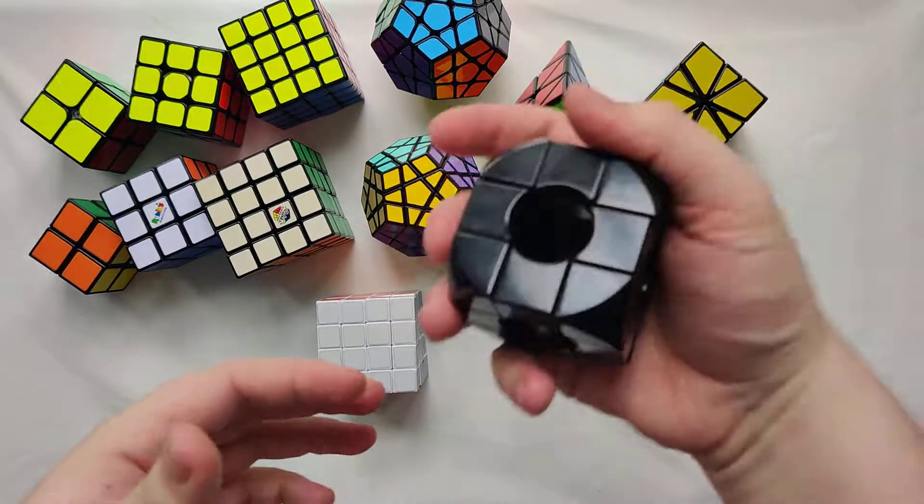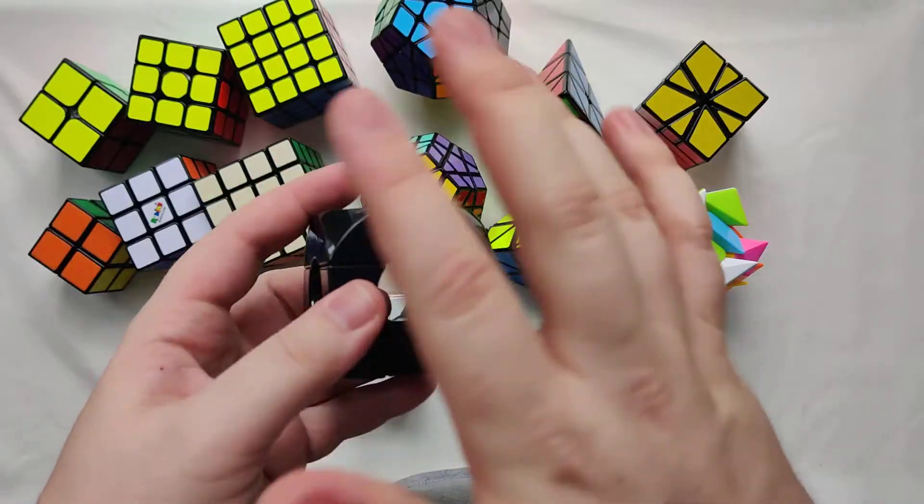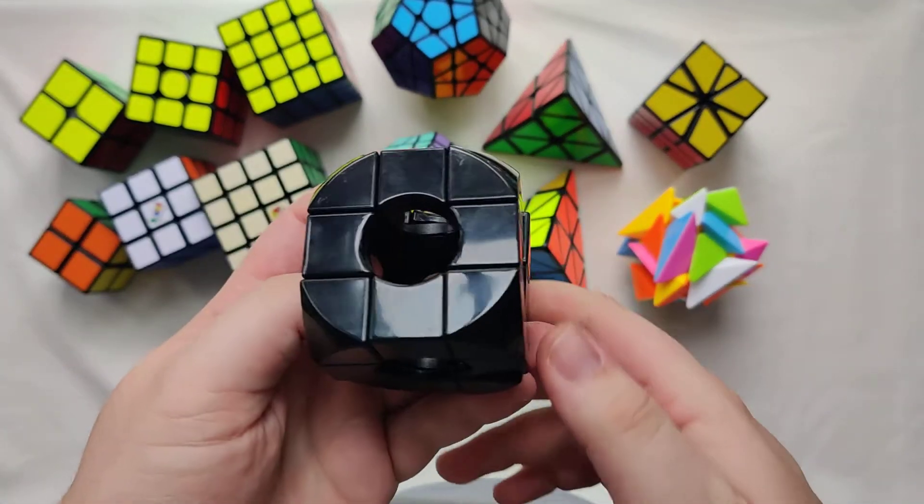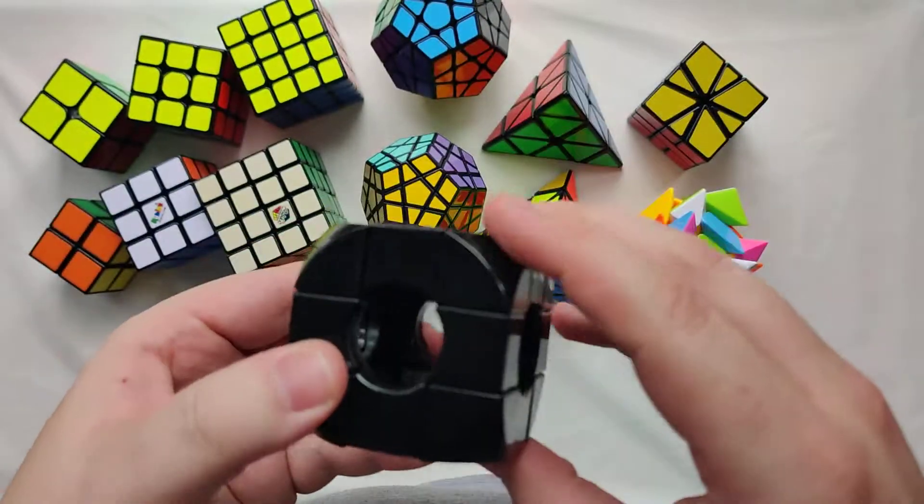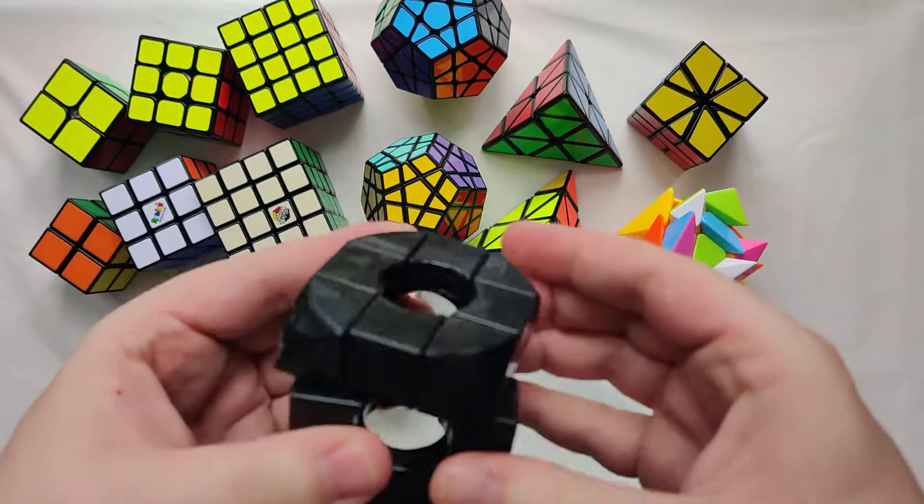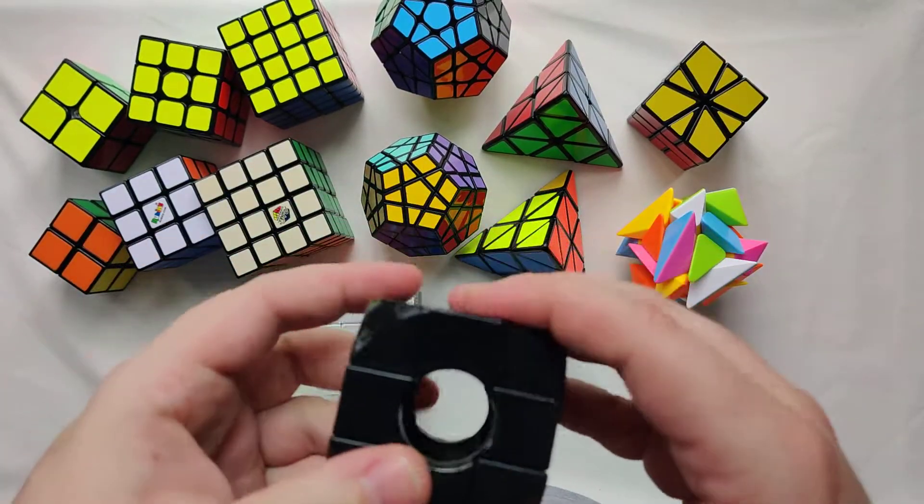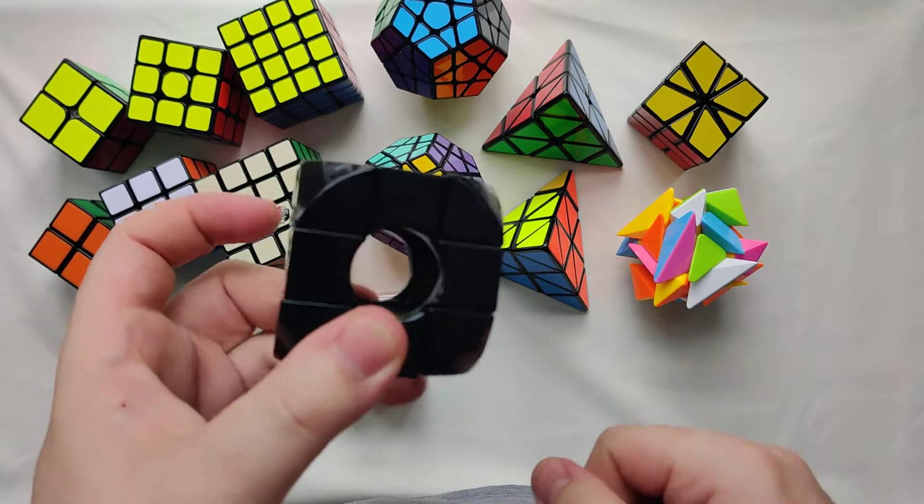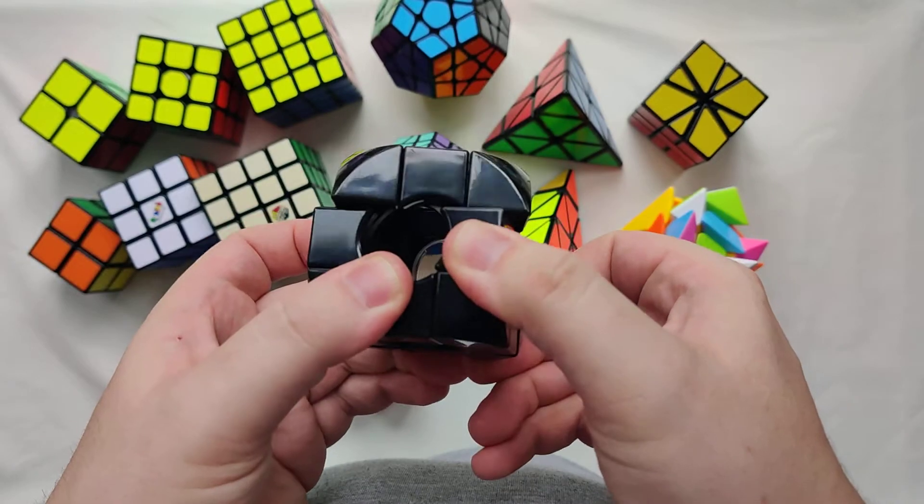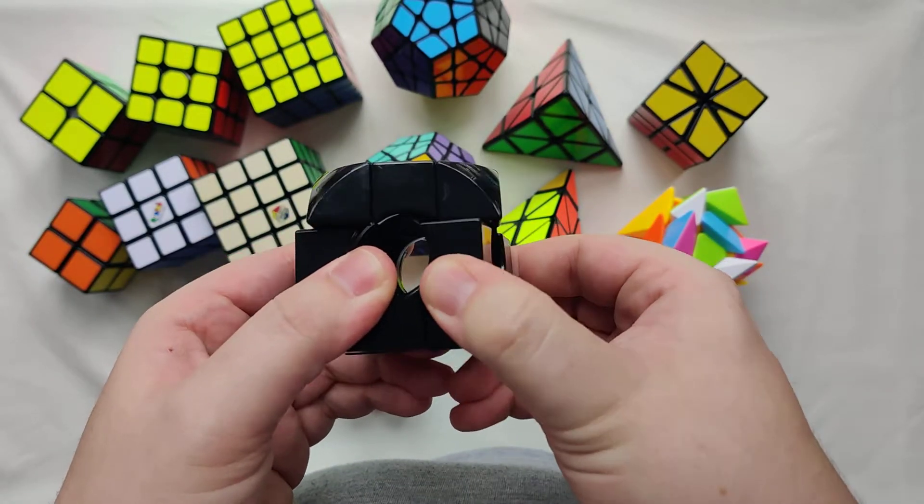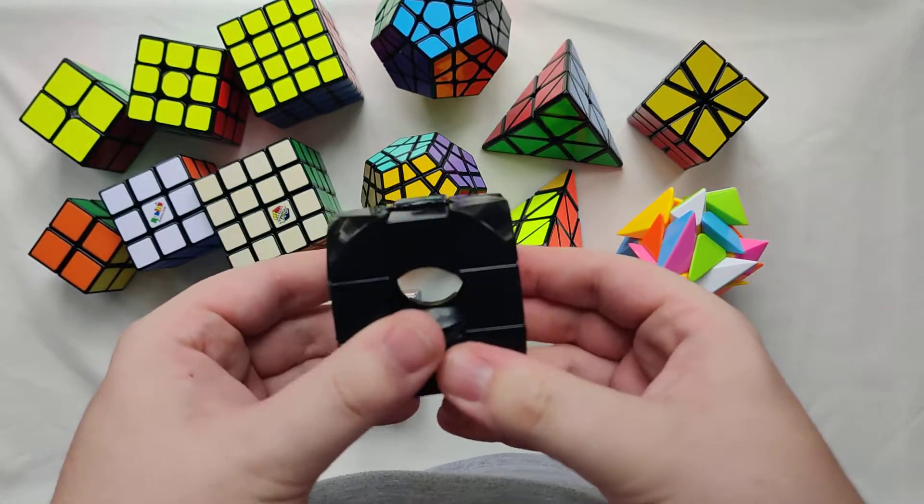And last but not least, the easiest one to solve. The void cube. Stickerless. The stickers were peeling massively on this one, and so I had to just get rid of the stickers. I'm currently looking for some replacement stickers for it. But at the moment, it is easy to solve. Well, because there are no stickers, but one of the worst of turns. Because obviously there's no core, which means there's no spring, which means no corner cutting.